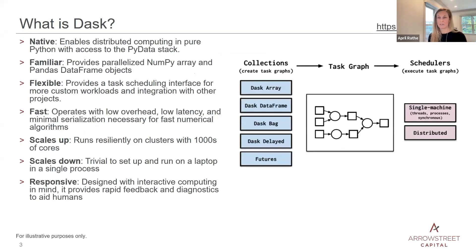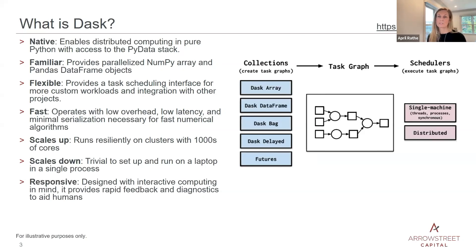A brief recap of Dask — this information is taken from the Dask website. The first key feature is that Dask is written in Python. It's a distributed computing and parallelization framework that integrates natively with the PyData stack. It provides interfaces familiar to people working with NumPy arrays and Pandas DataFrames, and two levels of parallelization: implicit, where parallelization is built into DataFrame, array, and bag objects; or explicit, where you define the task graph, the partitioning strategy, and use Dask delayed and futures.